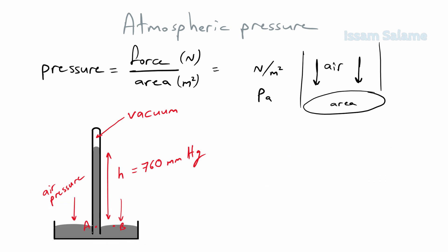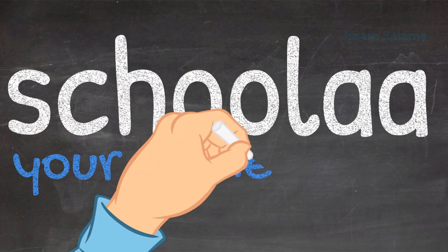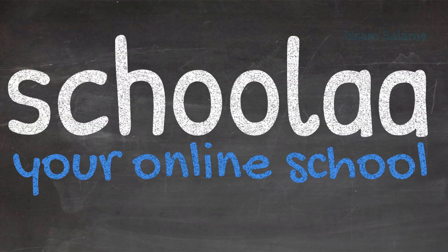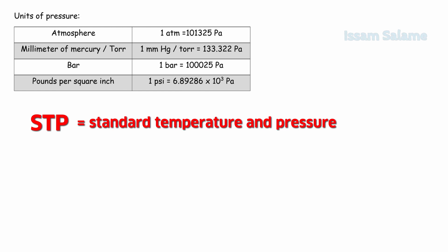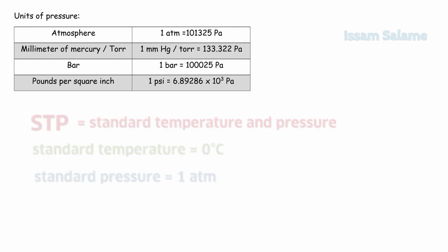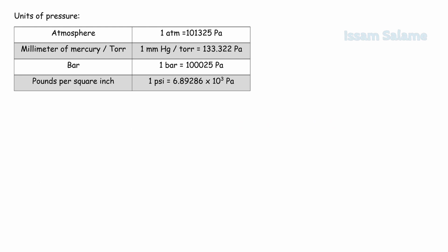Now let's move to the second objective: practice on converting units of pressure. Even though the SI unit for pressure is the Pascal, you may encounter pressure in different units, such as atmosphere, millimeters of mercury (also known as torr), bar, and pounds per square inch. Before we practice, note that STP stands for standard temperature and pressure: standard temperature is zero degrees Celsius and standard pressure is one atmosphere.